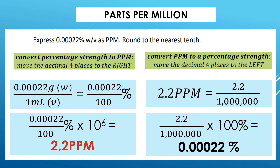To convert PPM to percentage strength, move the decimal point four places to the left. So 2.2 PPM becomes 0.00022%. Using the fraction method: 2.2 ÷ 1,000,000 × 100% = 0.00022%, which is the same answer as the shortcut.